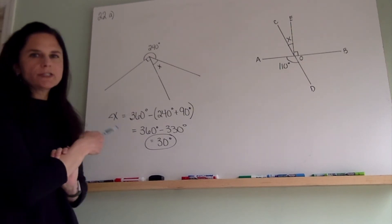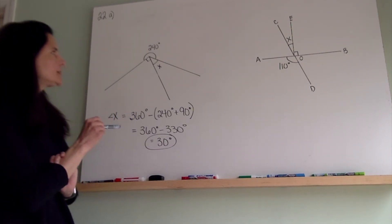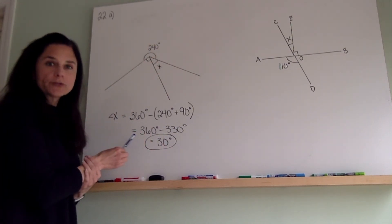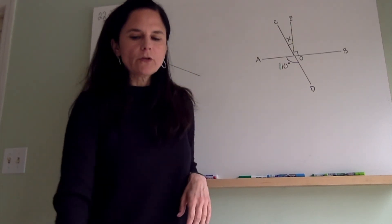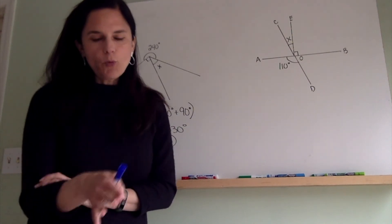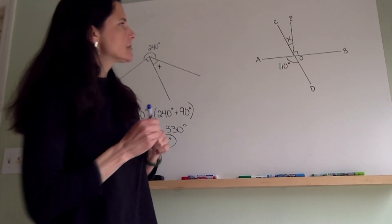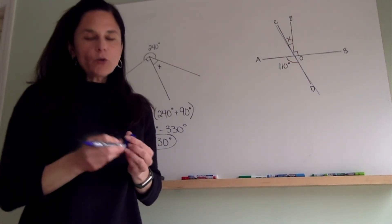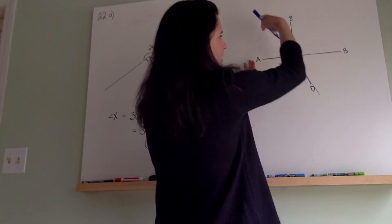Here's the answer to 22A. This one was pretty straightforward — it uses the same angle property that the sum of all the angles around a point is 360 degrees. When you add up 90 and 240 degrees, you get 330 degrees, and subtracting that from 360 gives you an unknown angle of 30 degrees. Now 22B is a little bit trickier, so I wanted to go over that one with you.